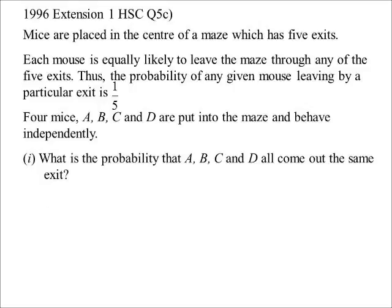Here's an HSC question. Mice are placed in a maze and the maze has five exits. Each mouse is equally likely to move out of any of the exits, so the probability of any mouse leaving a particular exit is one fifth. Four mice, conveniently named A, B, C, and D, are put into the maze and they behave independently — what one does doesn't affect what another one does.